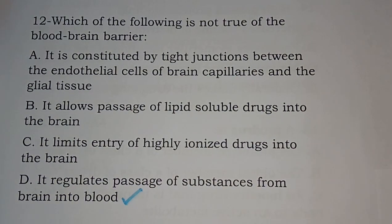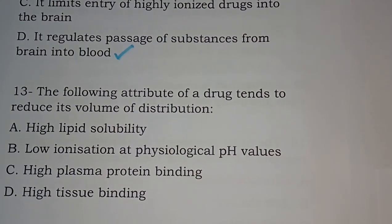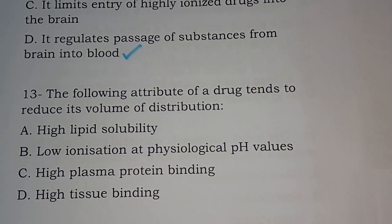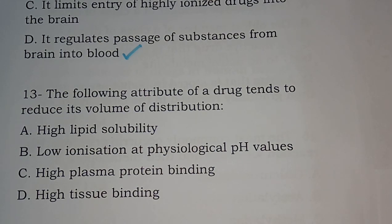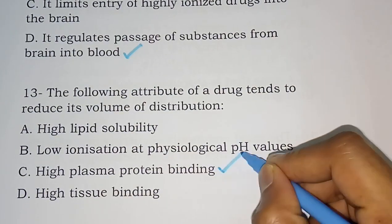Question number thirteen: the following attribute of a drug tends to reduce its volume of distribution — options are: high lipid solubility; low ionization at physiological pH value; high plasma protein binding; high tissue binding. The correct answer is high plasma protein binding.